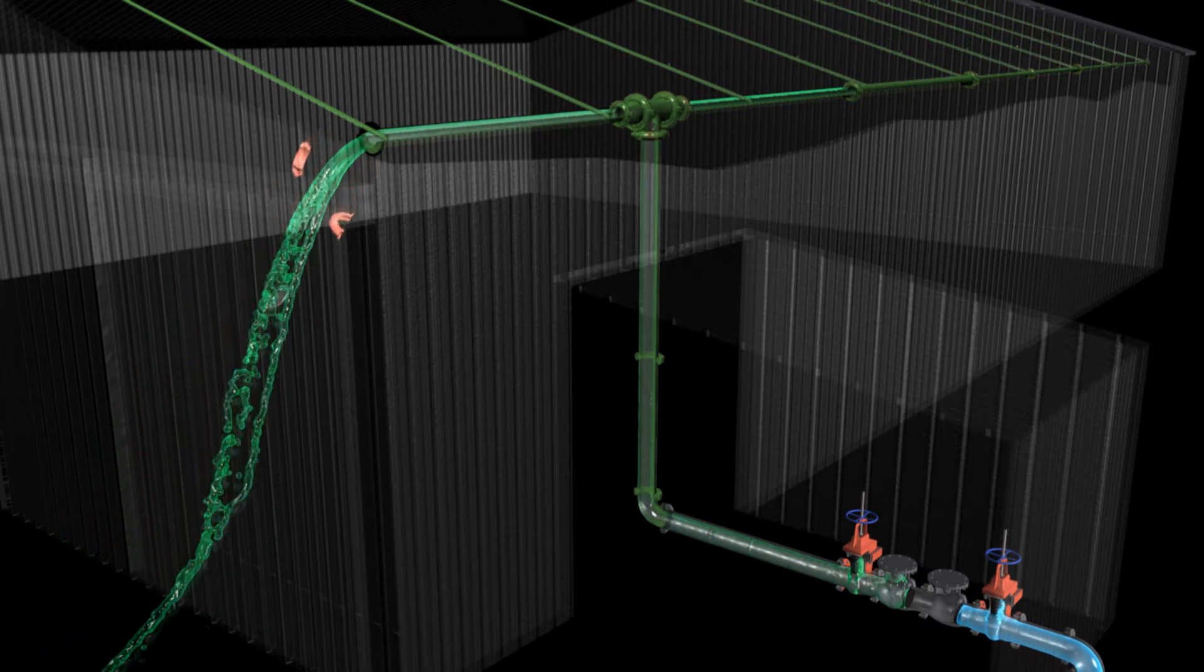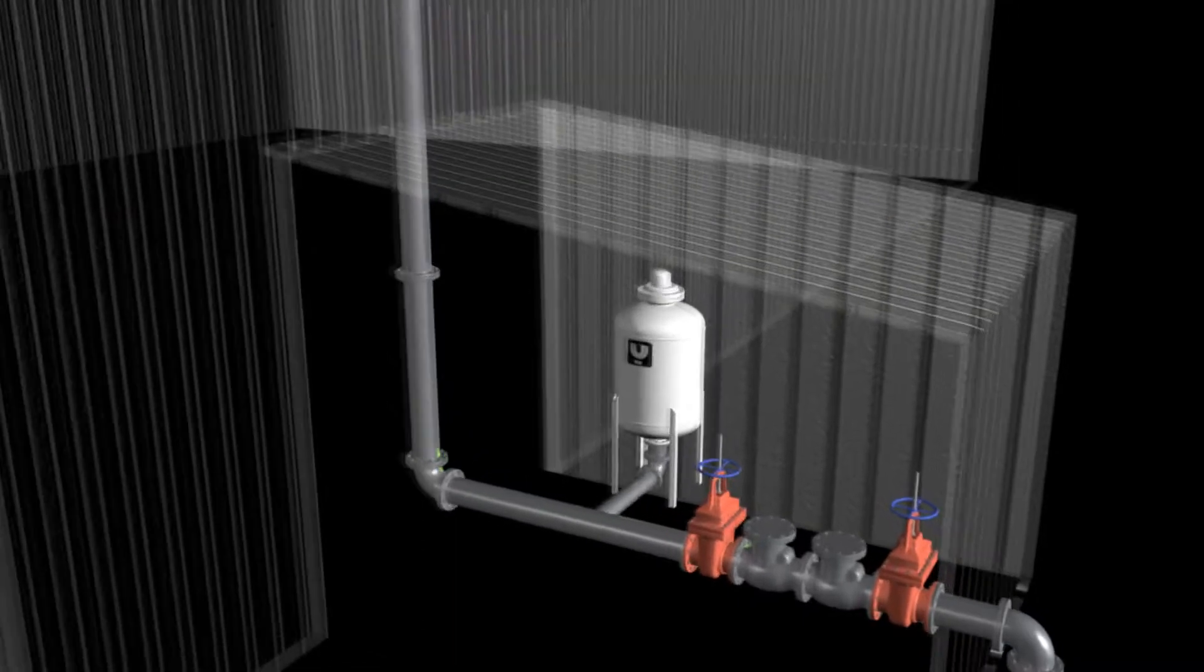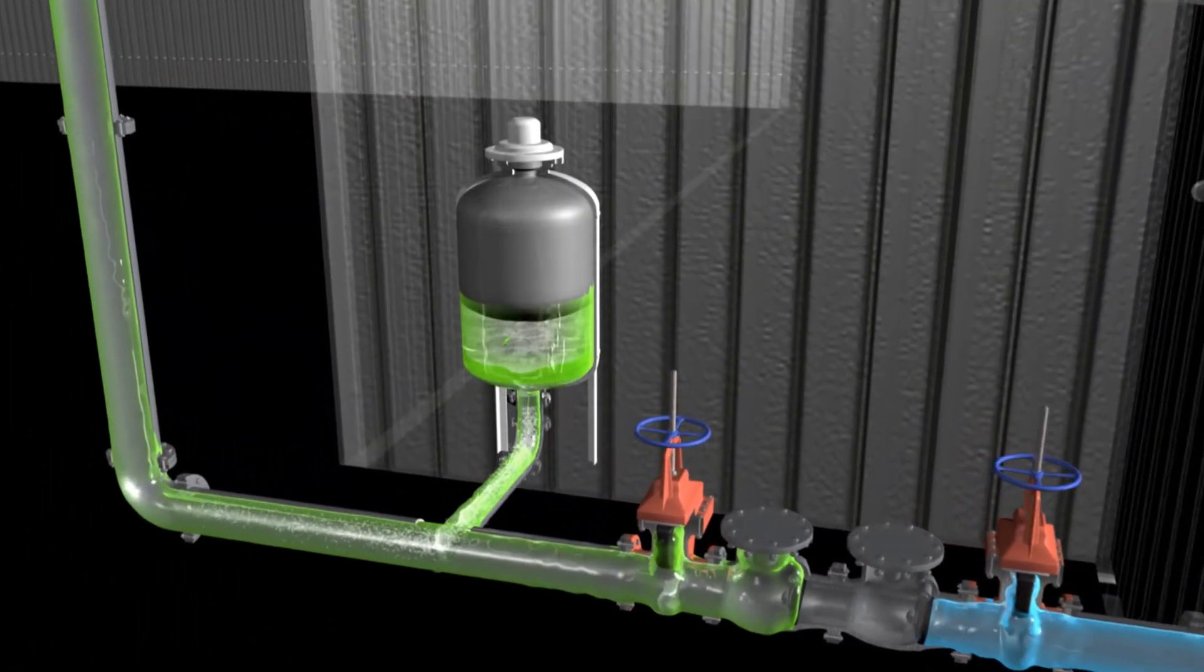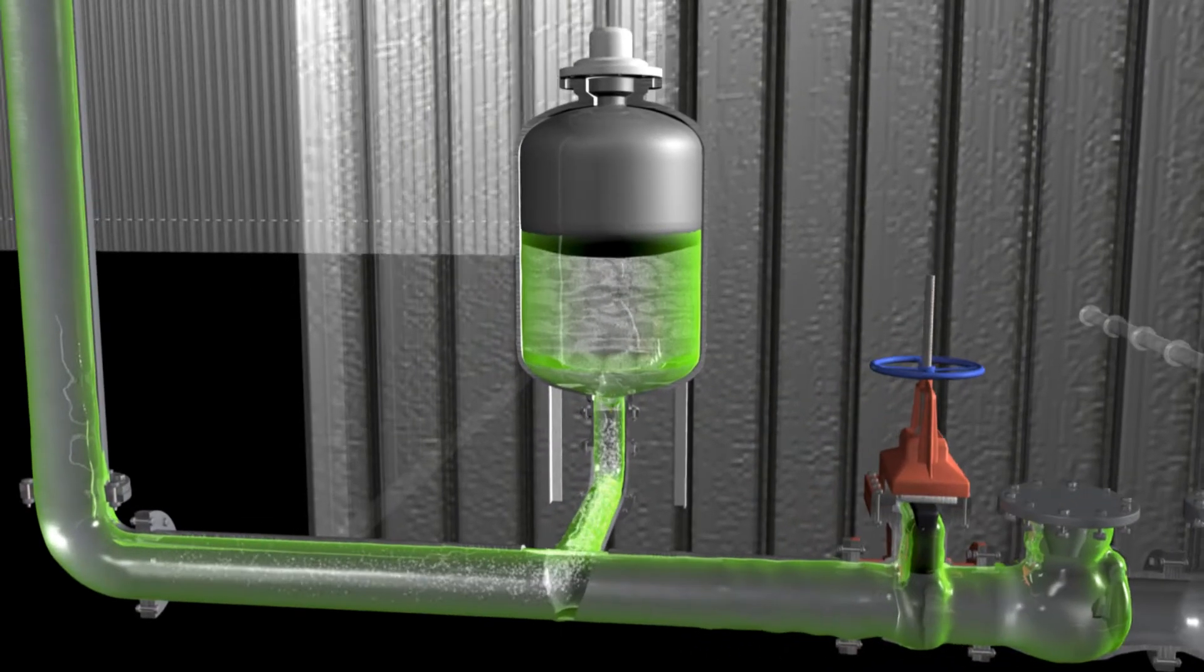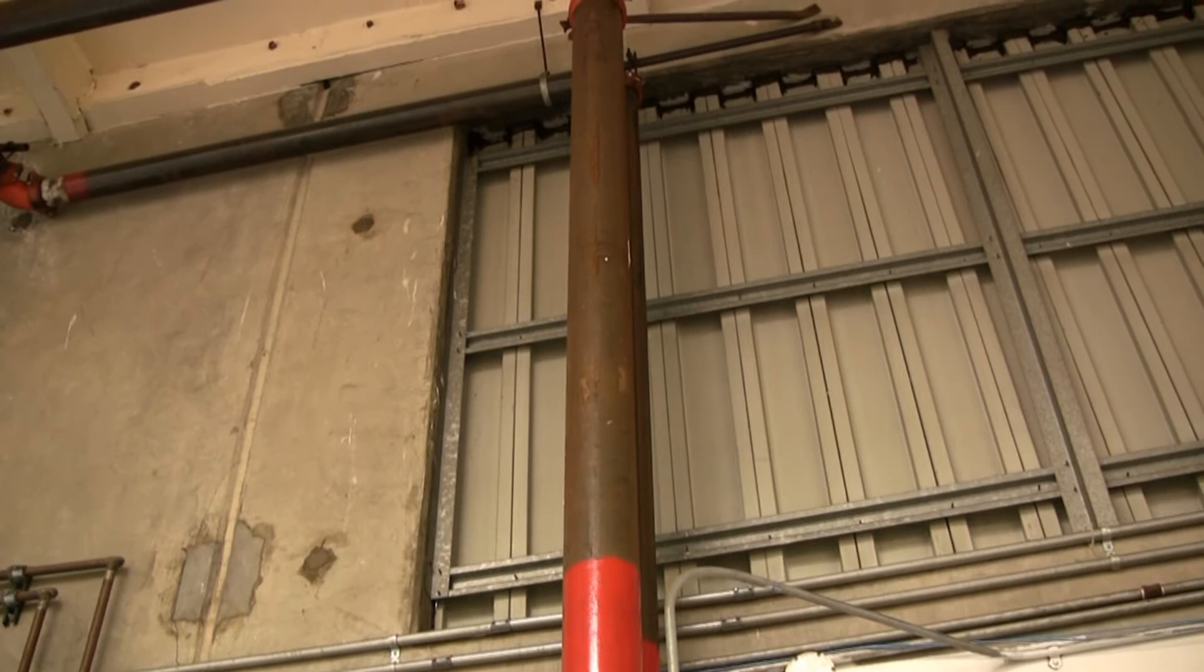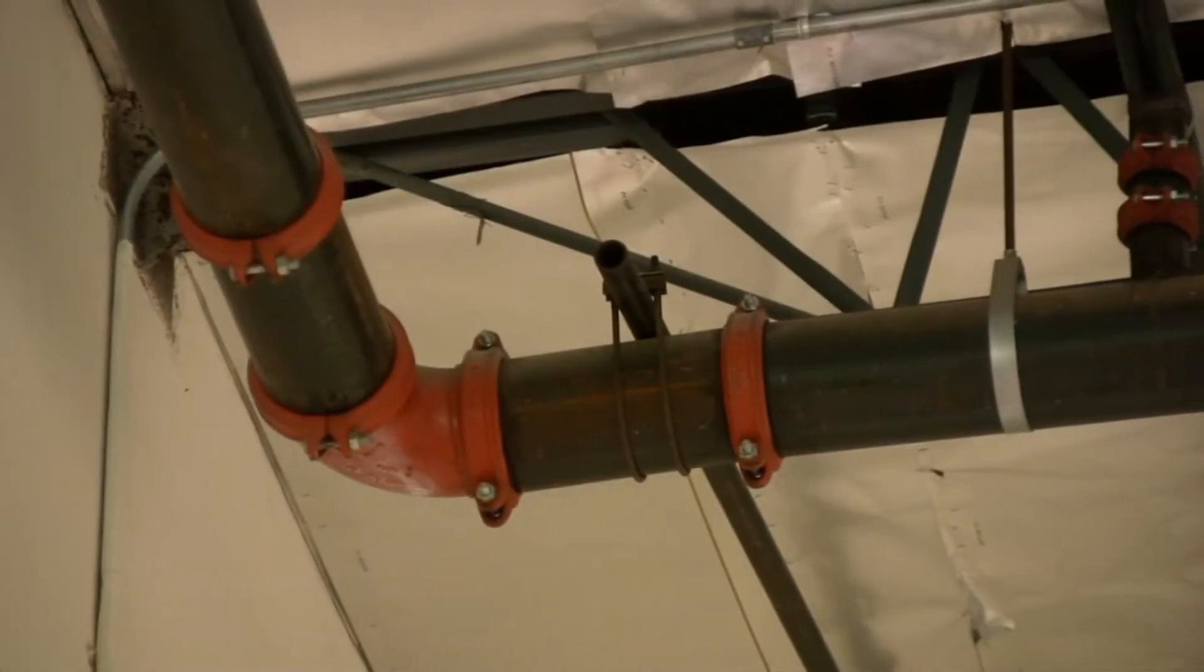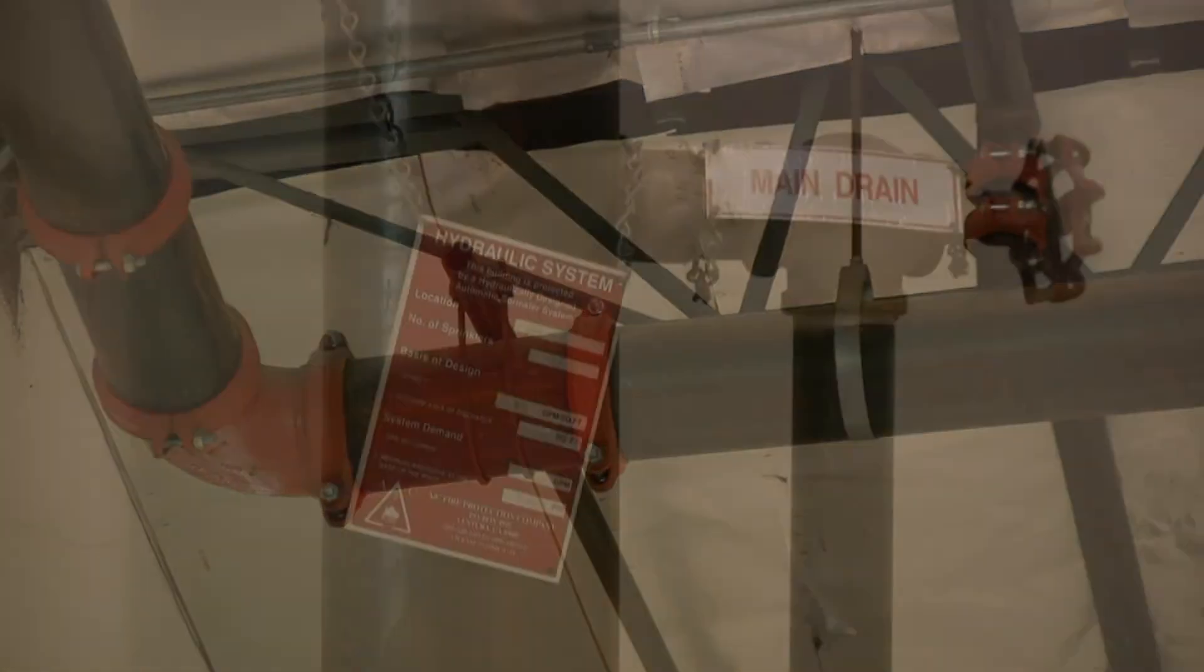With a bladder expansion tank installed downstream of the backflow preventers, the expanded volume of anti-freeze flows into the bladder expansion tank. Young Engineering bladder expansion tanks absorb the expansion of the anti-freeze fluid to reduce potential leaks and ruptures from over pressurization.